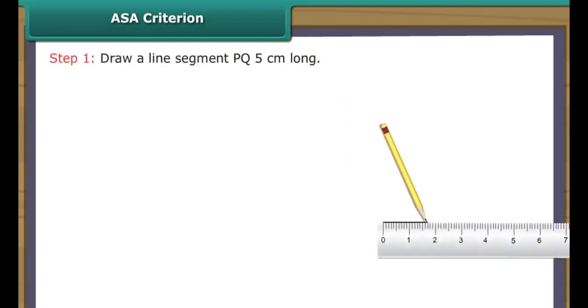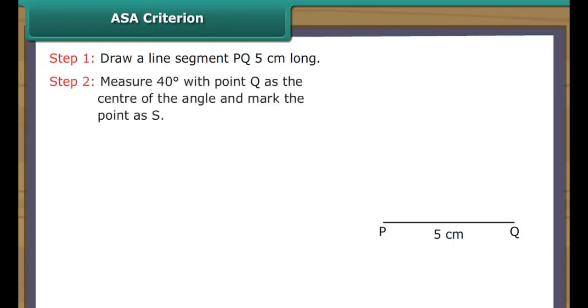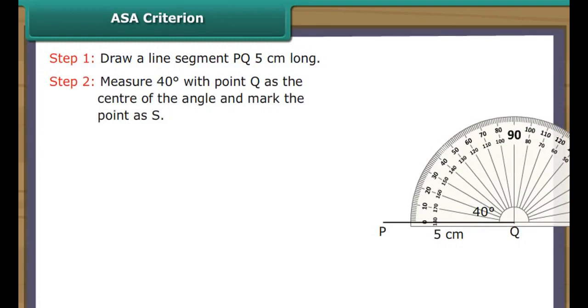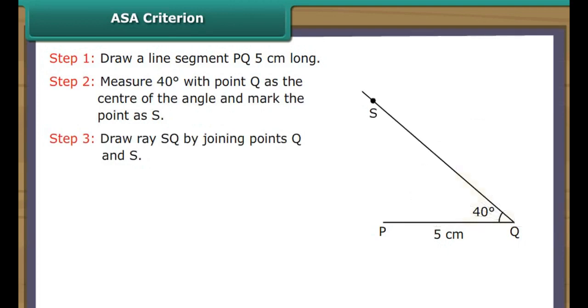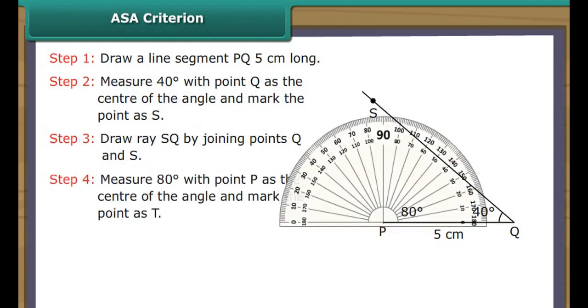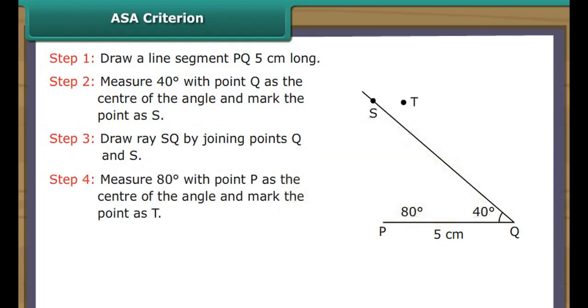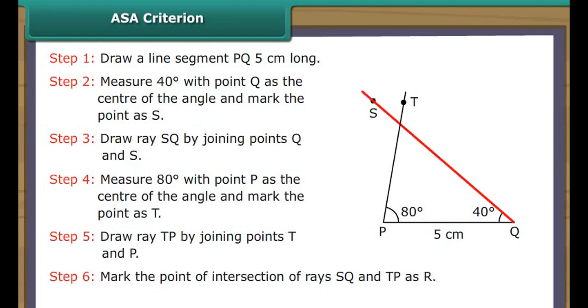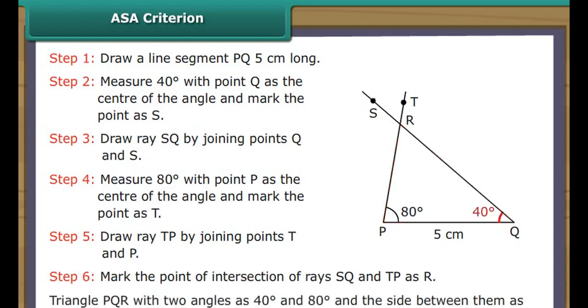ASA Criterion. Let us now draw a triangle, two of whose angles measure 40 degrees and 80 degrees and the side between them measures 5 cm. Draw a line segment PQ 5 cm long. Measure 40 degrees with point Q as the center of the angle and mark the point as S. Draw ray SQ by joining points Q and S. Measure 80 degrees with point P as the center of the angle and mark the point as T. Draw ray TP by joining points T and P. Mark the point of intersection of rays SQ and TP as R. Triangle PQR with two angles as 40 degrees and 80 degrees and the side between them as 5 cm is constructed.